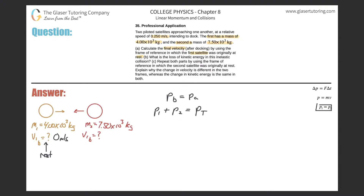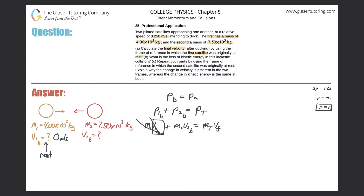Expanding each momentum term - momentum equals mass times velocity - we get: m1 times v1 before, plus m2 times v2 before, equals the total mass times the final velocity. Since the initial velocity of the first satellite is zero, that whole term drops out, simplifying to m2 * v2b = mt * vf.